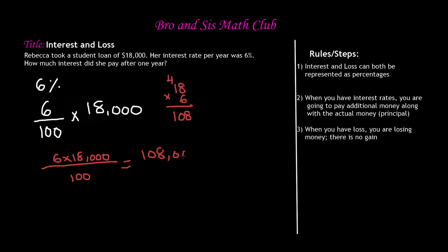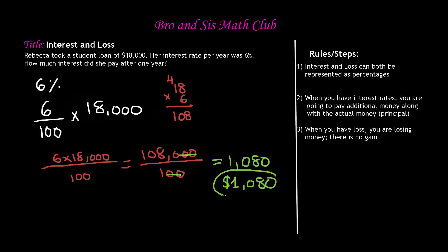We got one hundred and eight, and now we add back the three zeros to get one hundred and eight thousand. Then we divide by one hundred, so the two zeros in the numerator and two in the denominator cancel, leaving us with one thousand eighty over one. Any number divided by one is that number, so the answer is one thousand eighty dollars — that is the interest Rebecca had to pay.